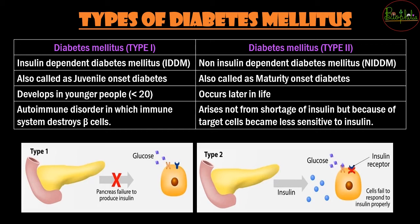There are two types of diabetes mellitus. It is not always the case that diabetes is caused by a decrease in insulin. Type 1 is insulin-dependent diabetes — the amount of blood glucose the person has depends on how much insulin is available. It is also called juvenile onset diabetes because it majorly occurs in younger people, under 20 years of age. It is caused by an autoimmune disorder where the body's own immunity destroys the beta cells.